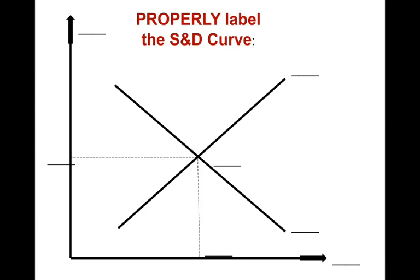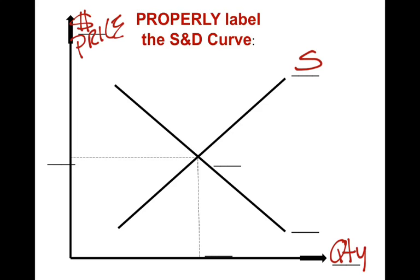Let's make sure we understand how to label a properly labeled supply and demand graph — really super important. The quick and easy way is to draw a graph with an X and start labeling. What goes on the vertical axis is always price — use the dollar sign to indicate we're in the U.S. What's on the horizontal is simply quantity, because it's going to be either quantity supplied or quantity demanded. The upward sloping line is the supply curve, and the downward sloping line is the demand curve.